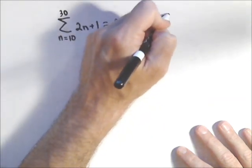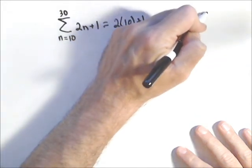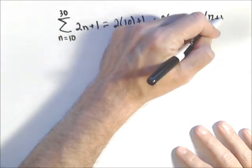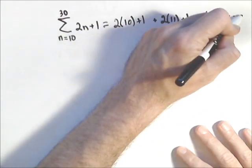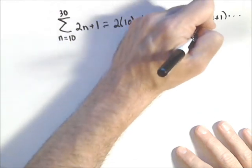Plus, that goes up by 1 every time: 2 times 11 plus 1, plus 2 times 12 plus 1, and so on and so forth. We would end with 30.